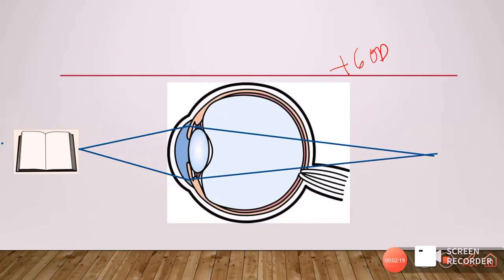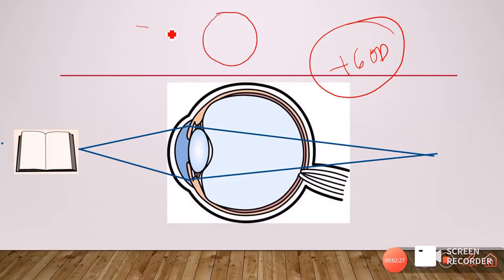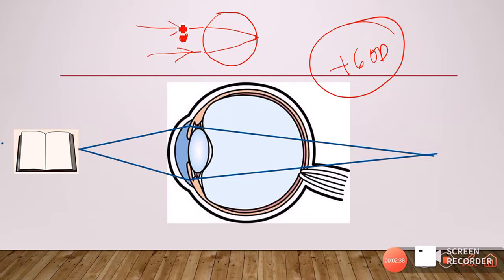With this limited plus 60 diopters of average power, the eyeball can converge only parallel rays from far onto the retina. But whenever an object is placed near the eyeball and we have to look at it, the rays instead of being parallel will be diverging in nature, and such diverging rays will make them focus behind the eyeball.